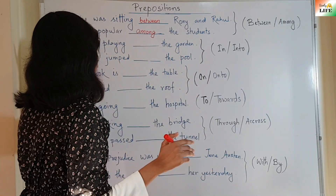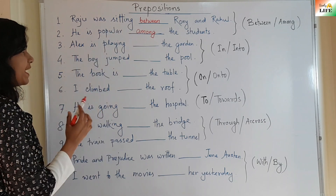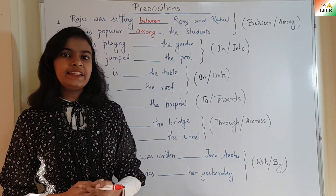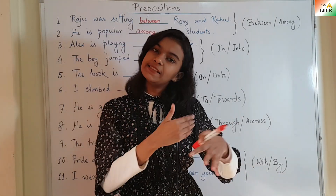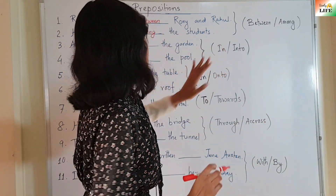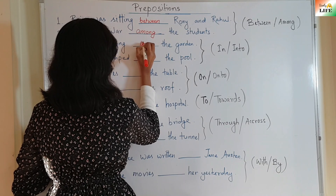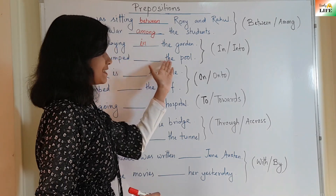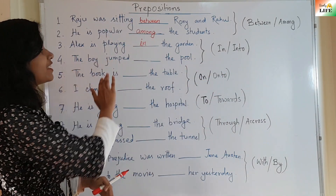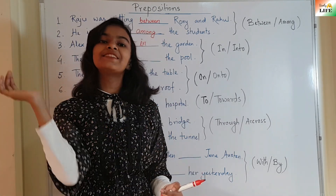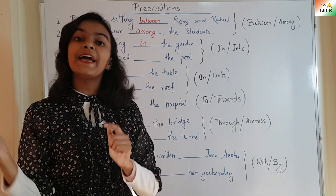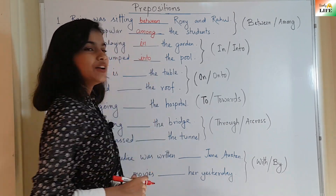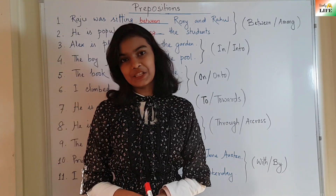Now let us take a look at the sentences here. Alex is playing — the garden. He is in there, so we will use 'in'. Alex is playing in the garden. The boy jumped — the pool. 'Jumped' means caused a movement. The boy jumped into the pool. I hope the difference between 'in' and 'into' is clear.